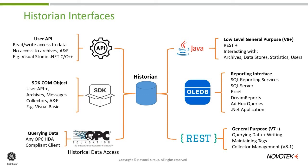From the REST API, you can query data, write data back into historian, and maintain tags. Some of the new features at version 8.1 allow you to manage collectors from it. Many of GE's newer software products communicate with historian through the REST interface.